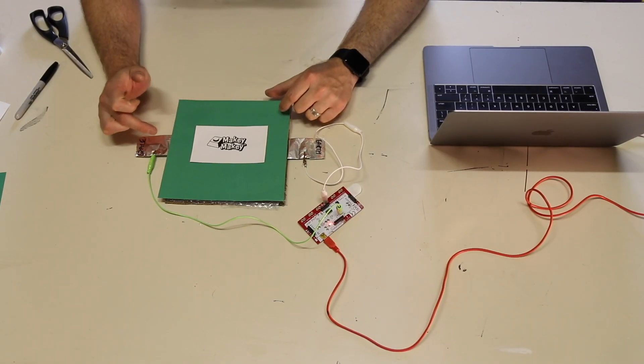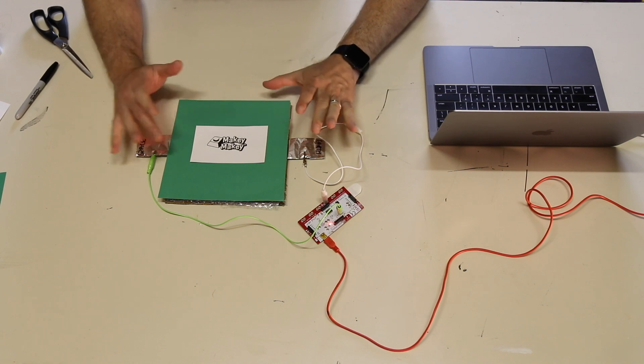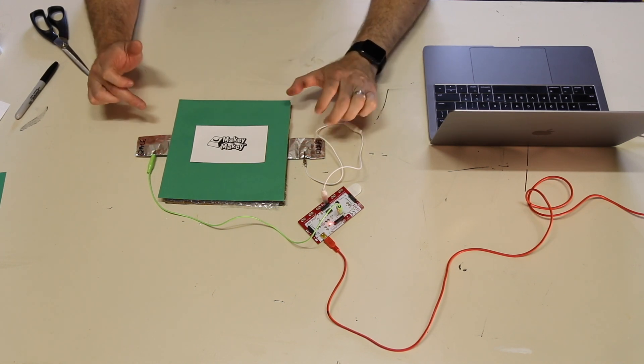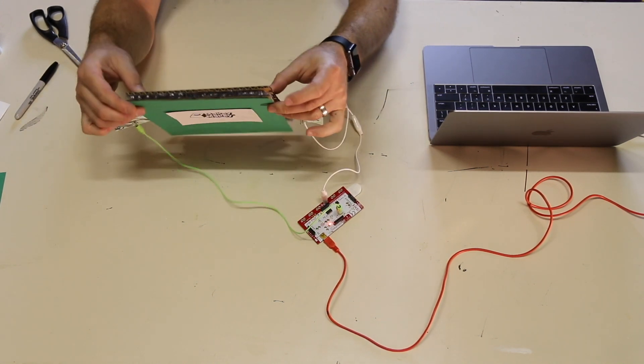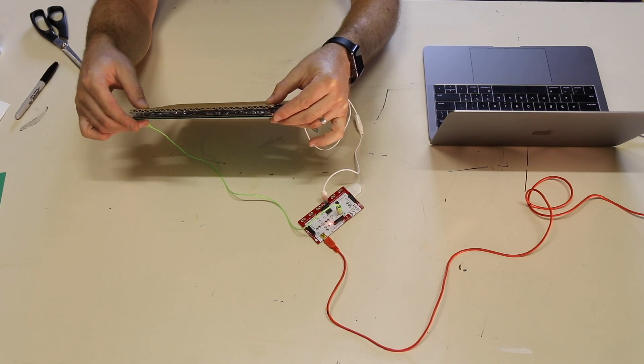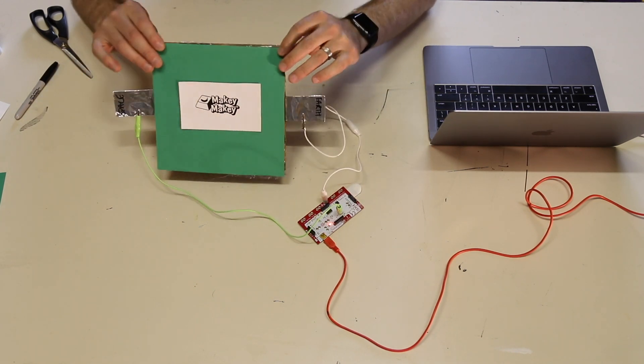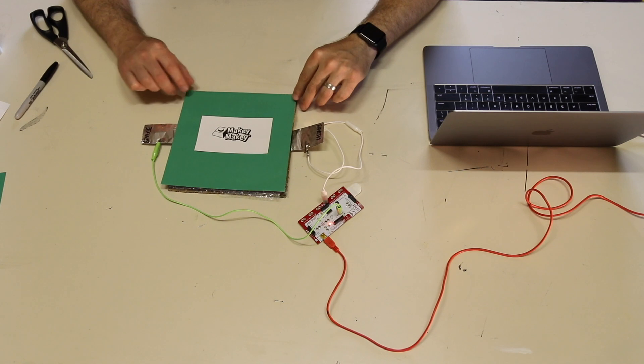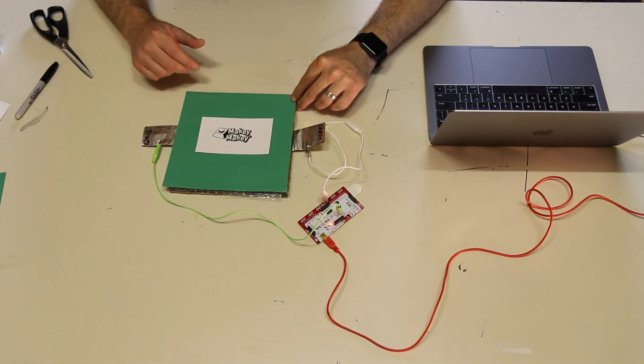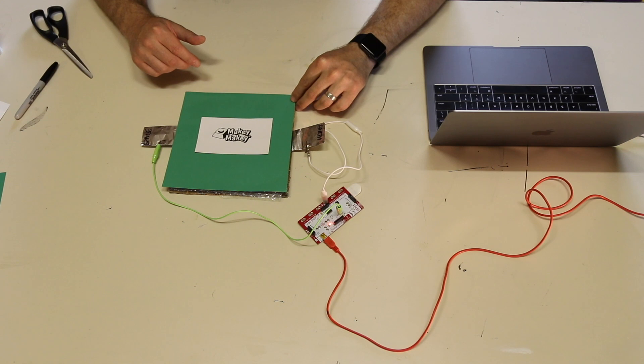Okay, so here we are with the finished Makey Makey pressure switch. I've just added a little bit of cardboard and this project has two pieces of bubble wrap in it. It was too sensitive with just one piece, so the two definitely worked a lot better for this project.